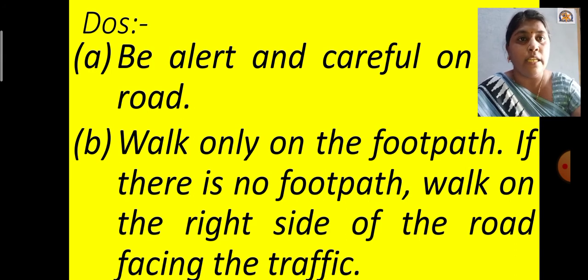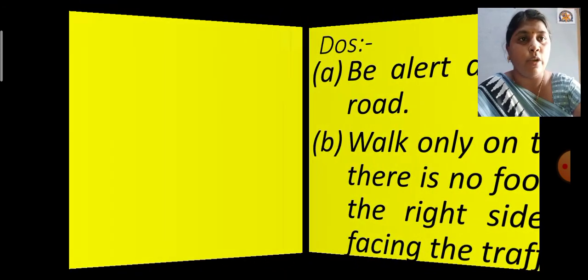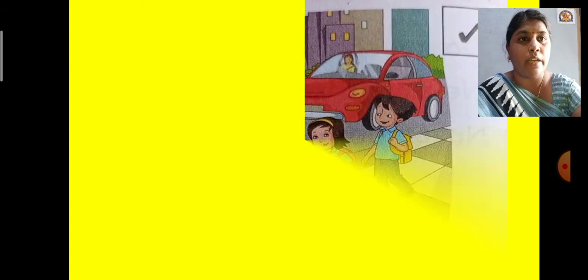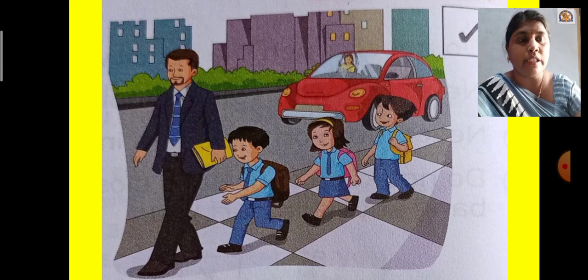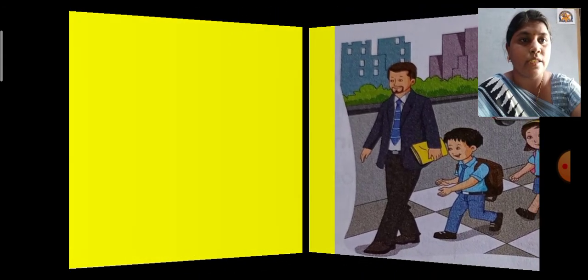If there is a footpath, you have to walk on the footpath only. These are the dos. See the picture — that teacher and the children are following the traffic rules; they are walking on the footpath. In this way we have to follow the rules.